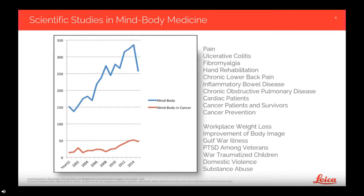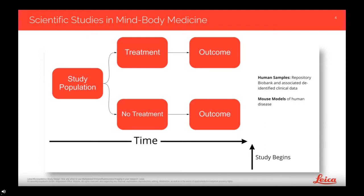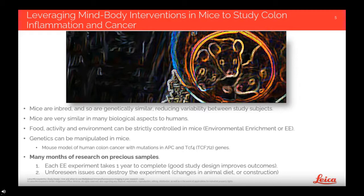My lab was interested in the early stages of tumor initiation and cancer prevention, which led us to the field of mind-body medicine, or stress reduction in cancer prevention. In this field, researchers use prospective studies to survey participants on behaviors and compare survey results to outcomes. Embarking on a prospective cohort study for mind-body intervention is very expensive and can take years to complete. Using mouse models as an alternative can be an effective way to study cancer prevention.